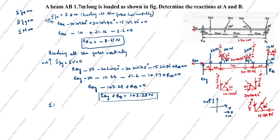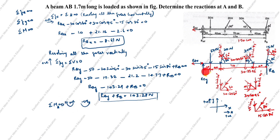Now we take summation of moments at A = 0. Clockwise is positive, anticlockwise is negative. Moment at A due to forces at A is 0. The 50 Newton force at distance 20 cm creates a clockwise moment: +50 × 20. The vertical component 20 sin 60° at distance 60 cm is clockwise: +20 sin 60° × 60.